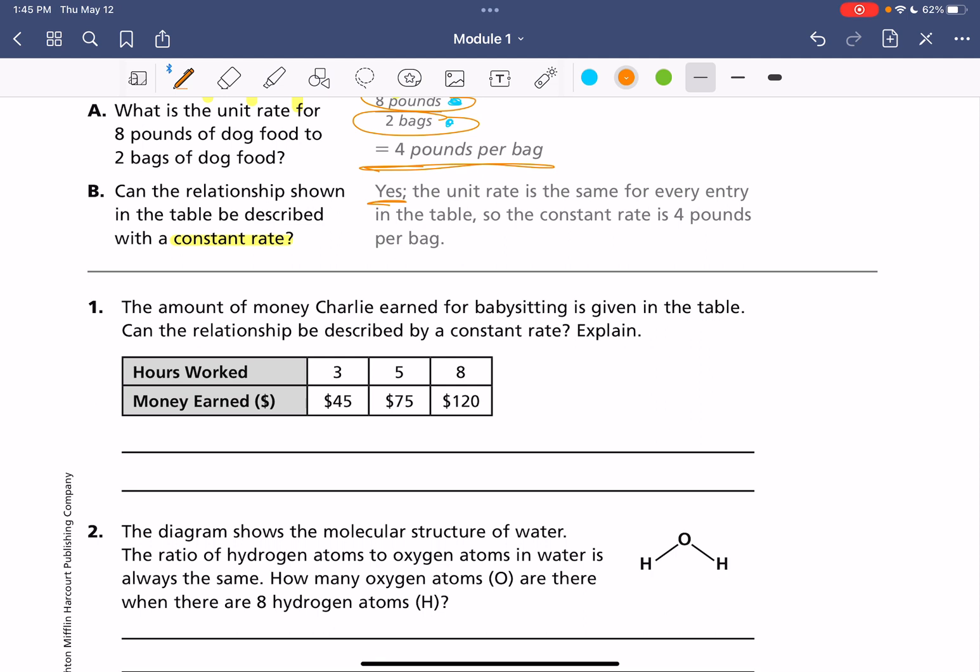So we are trying to figure out the dollars per hour, the rate per hour. So here we have $45 for 3 hours of work.